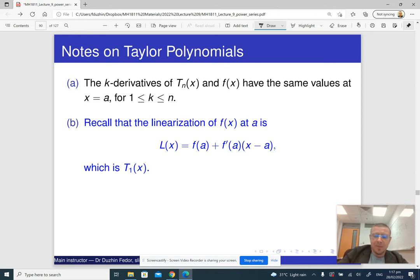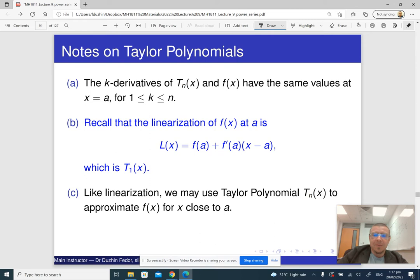So basically, just like linearization, Taylor polynomials are going to be approximations for our function by polynomials of higher degree. So if it is degree 1, then it's linearization. If it is degree 2, then it's a quadratic function,